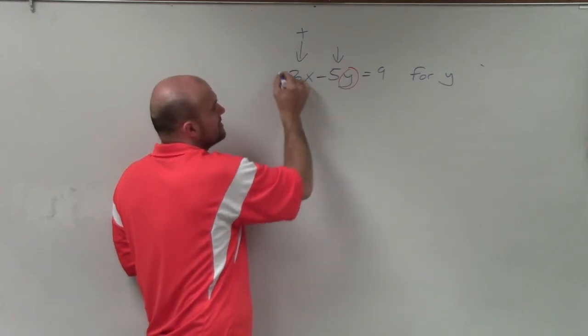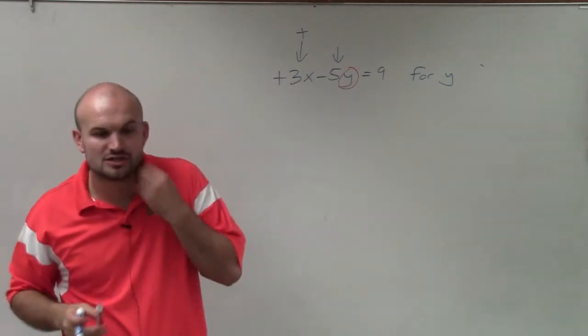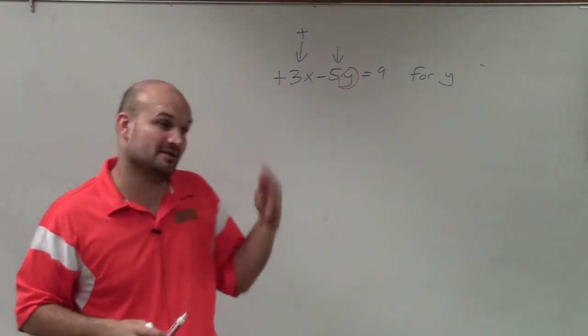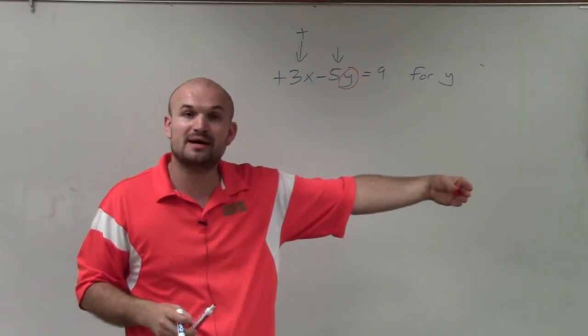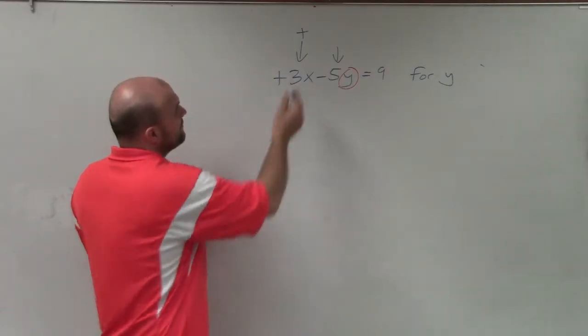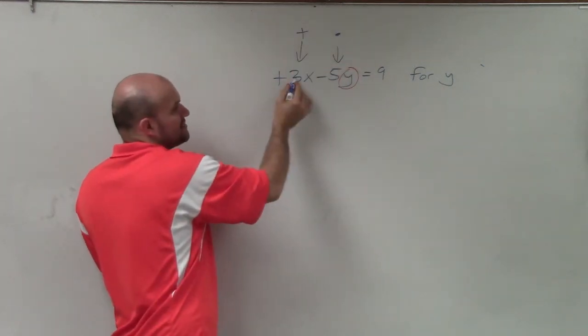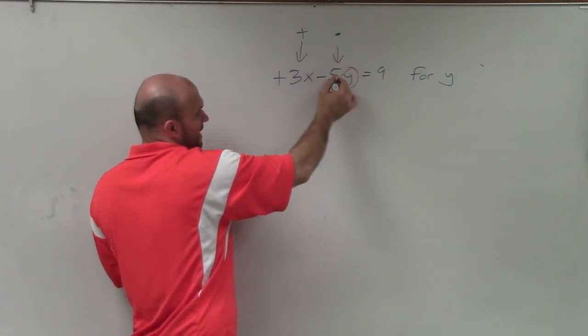The subtraction sign says it's being multiplied by a negative 5. There is no sign in front of the 3x, so we can show that it's going to be a positive 3, right? Because if it was negative, there would be a negative sign in front. So therefore, I'm adding a positive 3x and I'm multiplying by a negative 5.